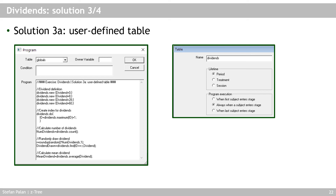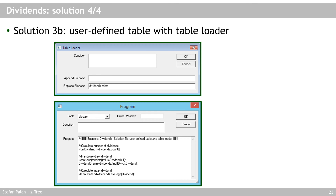A final variant uses a table loader — a Z3 element accessed via Treatment > New Table Loader — to read in a text file from your hard drive containing the dividend information. Once the file is loaded, this substitutes the manual writing of individual dividends in the program. You only need to calculate the number of dividends, draw the random dividend, and calculate the mean. The advantage: you don't need to change anything in Z3 when you change the dividends — just update the external file, which can be prepared in Excel and exported to text format.